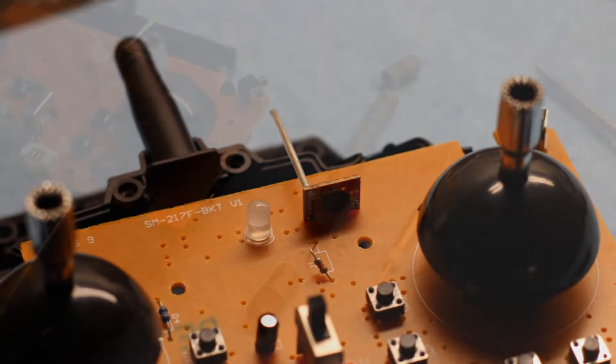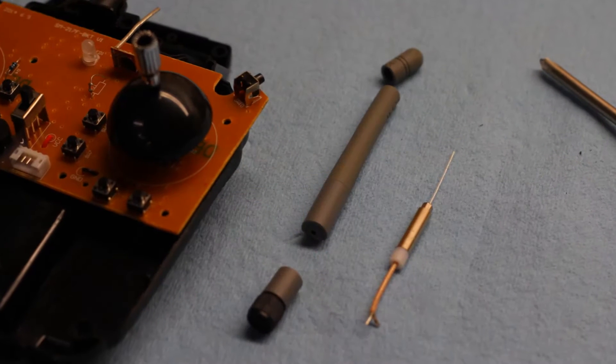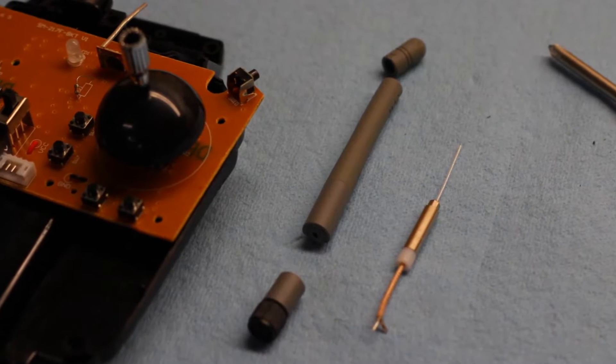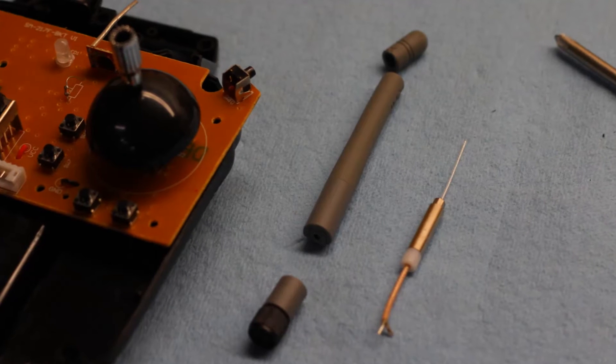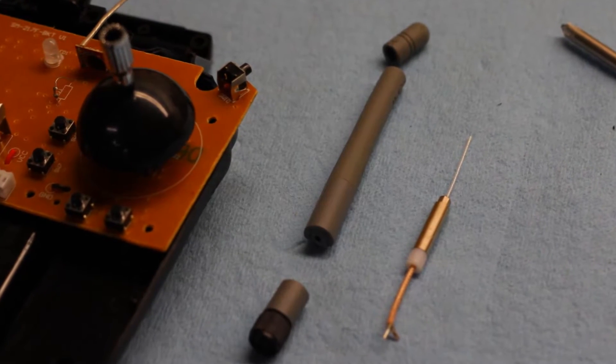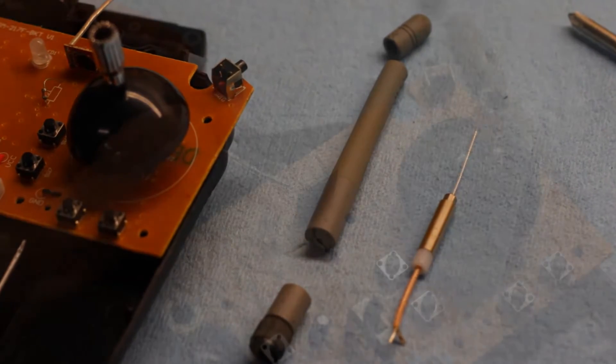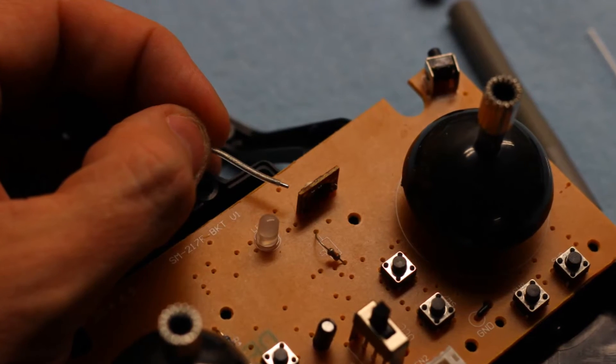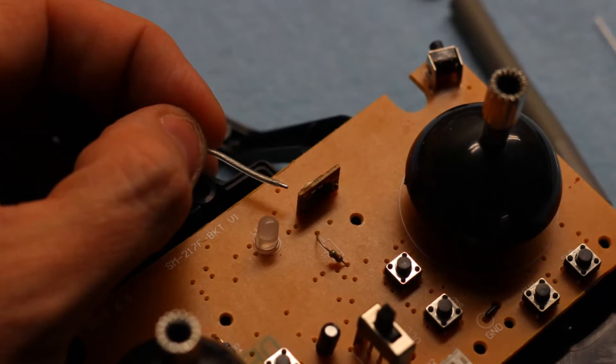The stock antenna is a quarter length wave 2.4 gigahertz, so the length of the wire is actually in tune to the frequencies of 2.4 gigahertz.